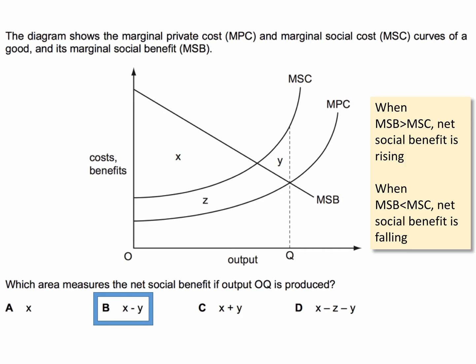If we take this area here, from this range of output, the social benefit curve is greater than the social cost curve, so total social benefit is rising up to that point. But beyond that output, in the area shaded Y, marginal social cost is now higher than marginal social benefit. So in that sense, social welfare in net terms would be falling.